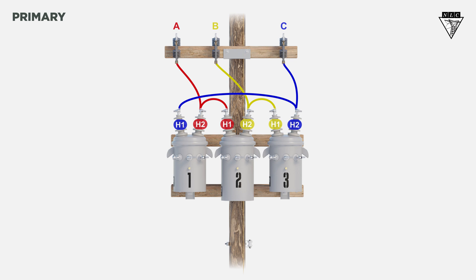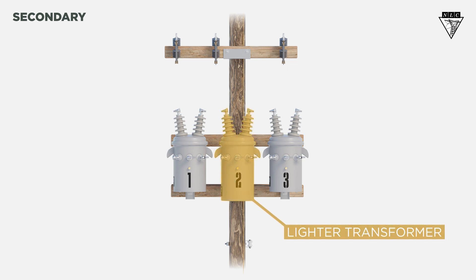Now, let's look at the secondary side. Delta secondaries don't allow all three transformers to share the single-phase load equally. Therefore, one transformer must provide the lighting load, called the lighter transformer.